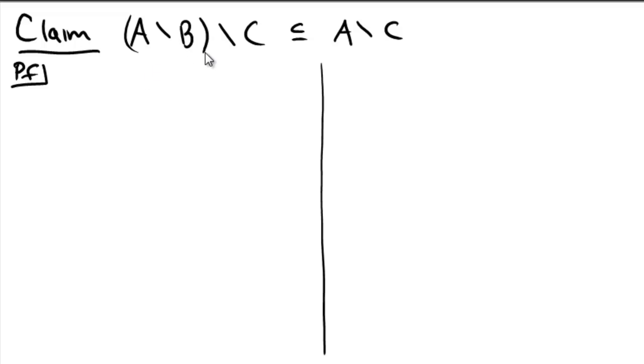This is only a set containment going to the left, so I actually only have one direction I have to prove. Let me start off like that. If I'm going to try to prove set containment left to right, I need to take an element on the left and show that it's in the right. So let's let x be an element of a minus b minus c.